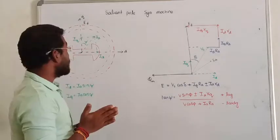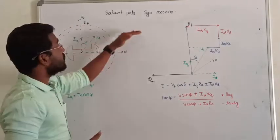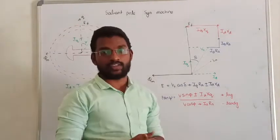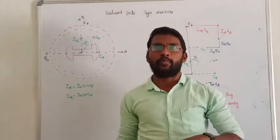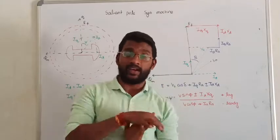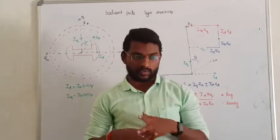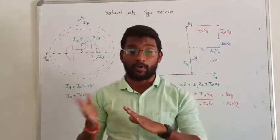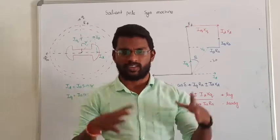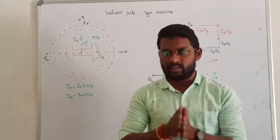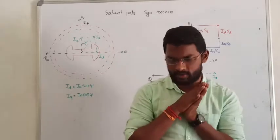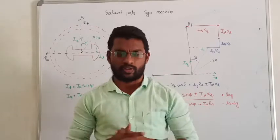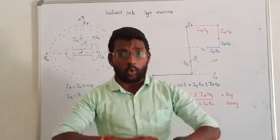Hi guys. Next we are going to discuss about salient pole synchronous machine. Already, at the end of the previous topic, you know, we covered the cylindrical type of synchronous machine — the speed, power, torque, and so many other parameters in case of cylindrical type of synchronous machine.